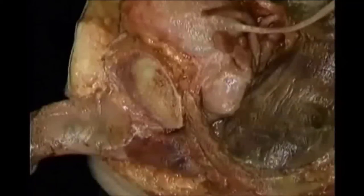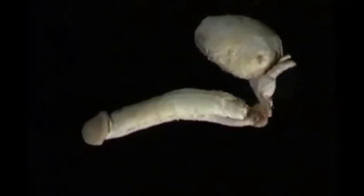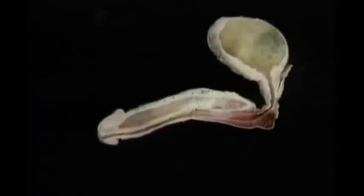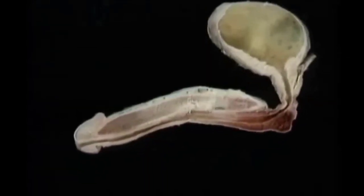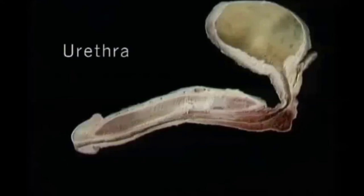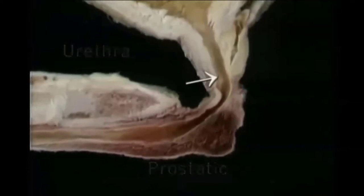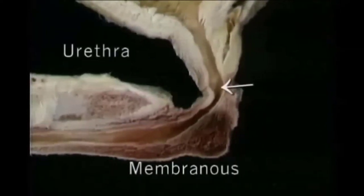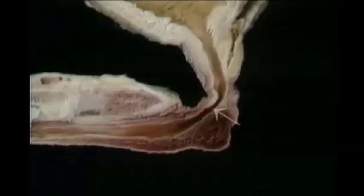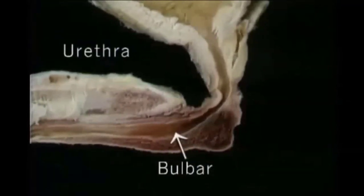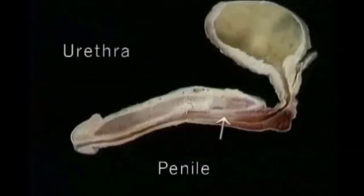To see more of the urethra, we'll look at an isolated specimen of the bladder, prostate and penis, but we'll divide in the midline. Here's the urethra. It's described as having four parts: the prostatic urethra that runs through the prostate, the short membranous urethra that passes through the perineal membrane, the curving spongy urethra in the bulb of the penis, and the penile urethra.